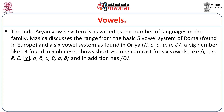The Indo-Aryan vowel system is as varied as the number of languages in the family. Masica discusses the range from the basic five-vowel system of Romani found in Europe, and a six-vowel system as found in Odia, and a large number like 13 found in Sinhalese, which shows short versus long contrasts for six vowels — e, ē, a, ā, o, u, ā — and in addition has a schwa.